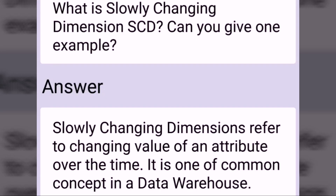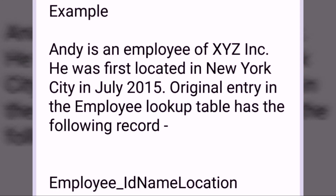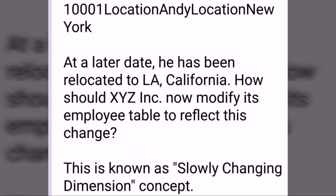What is a slowly changing dimension (SCD)? Slowly changing dimension refers to a changing value of an attribute over time. It is one of the common concepts in a data warehouse. For example, Andy is an employee of XYZ company who was first located in New York City in July 2015. The original entry in the employee lookup table had Employee ID 1001, Name Andy, Location New York. At a later date, he was relocated to LA, California. How should XYZ company modify its employee table to reflect this change? This is known as the slowly changing dimension concept.